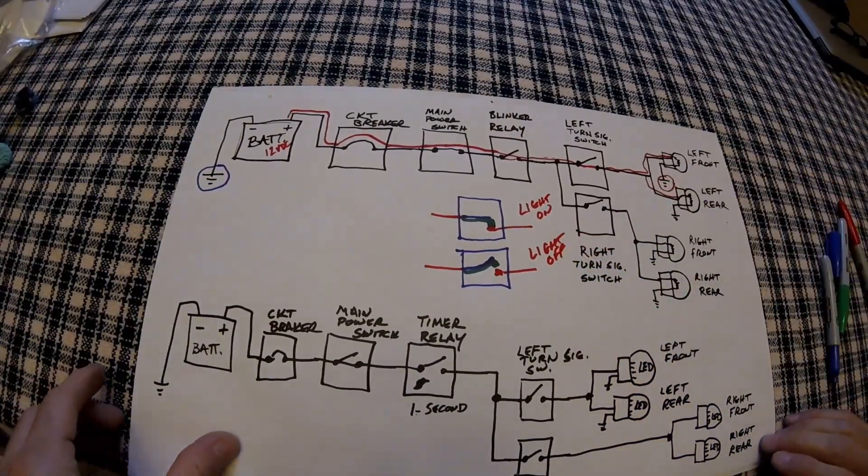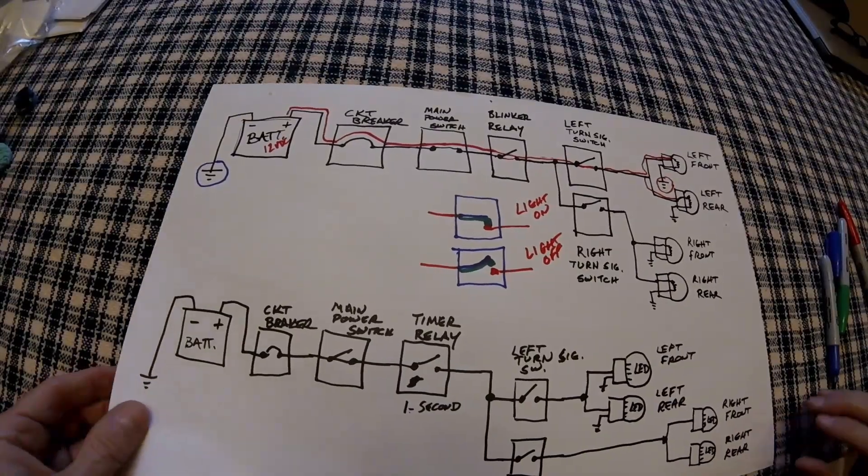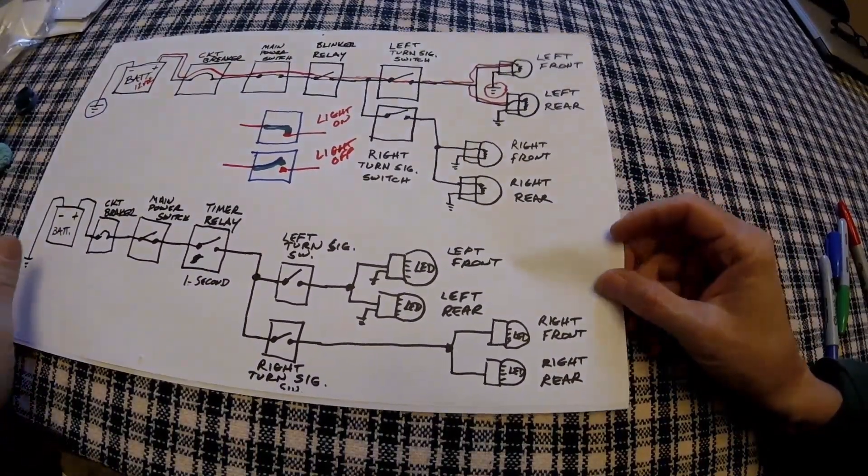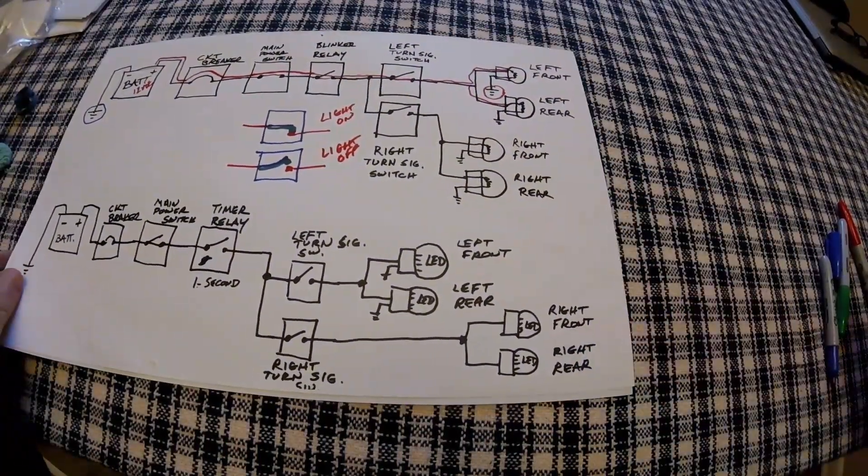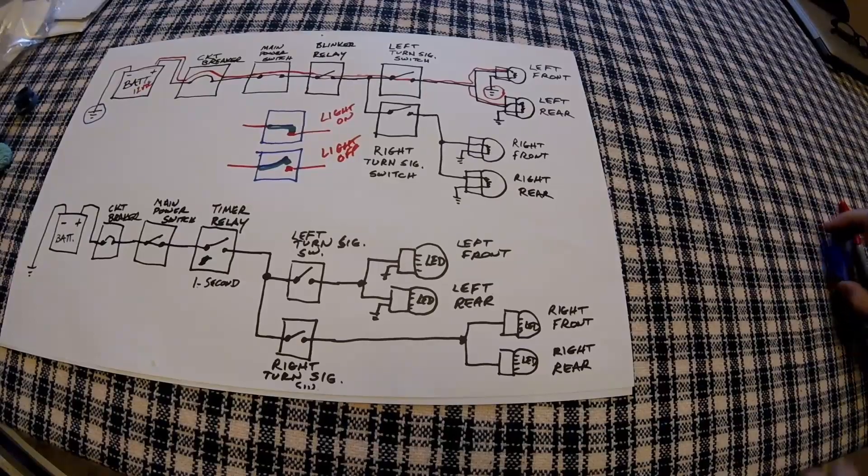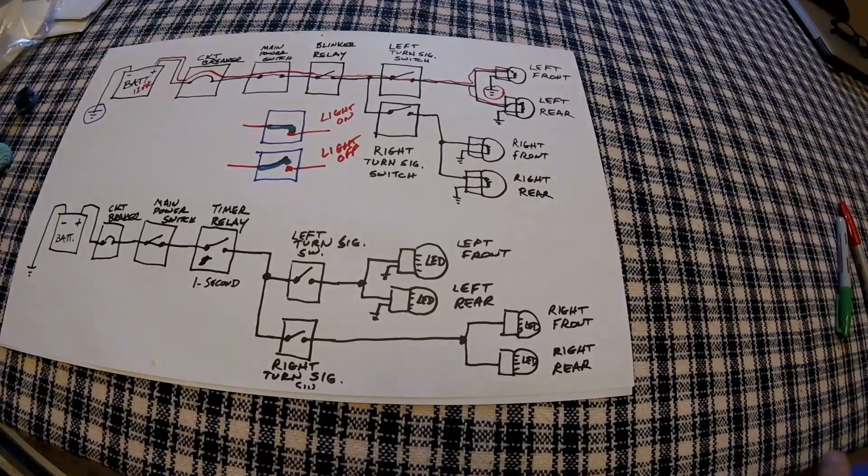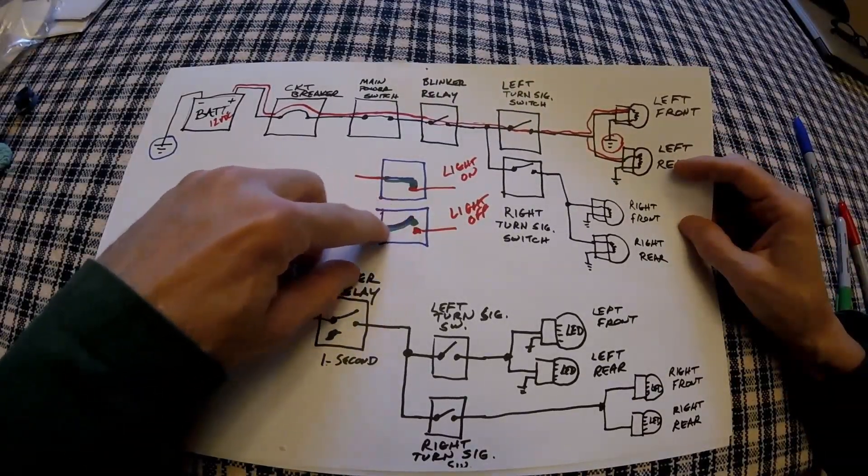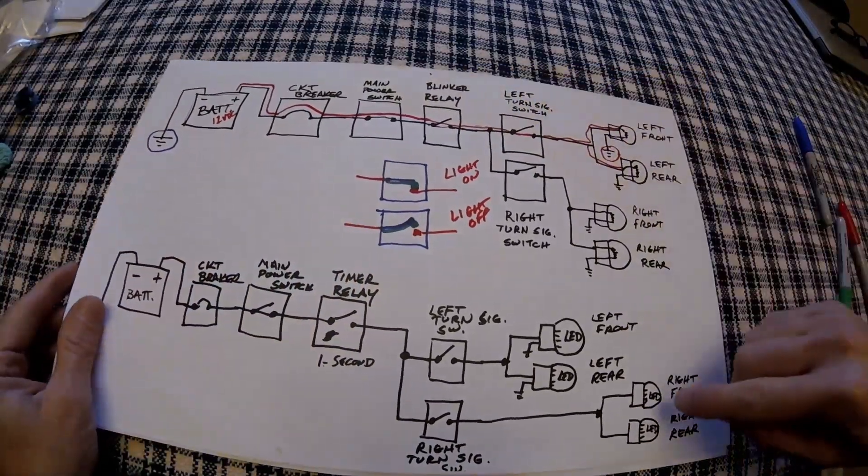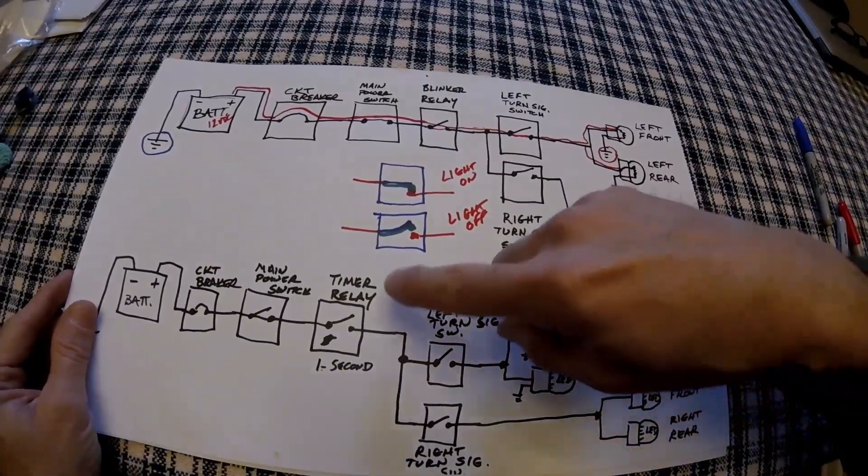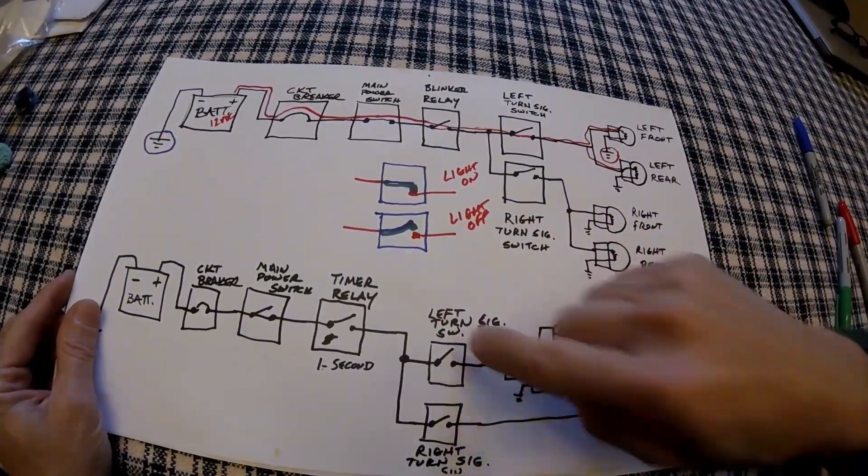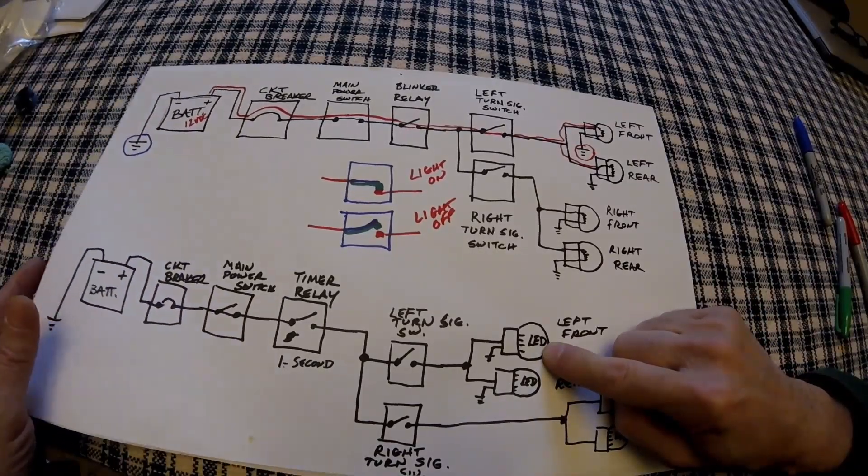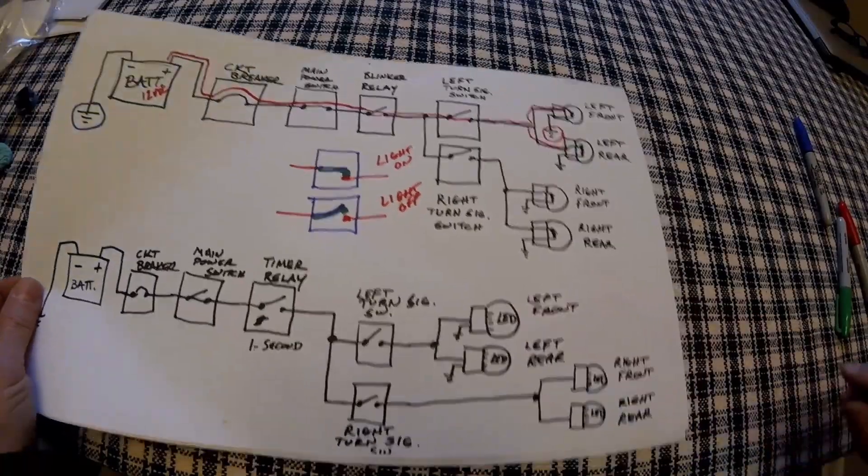So what actually happens is when you install LED bulbs, like on this drawing below, is the LEDs draw so much less than regular incandescent bulbs, it doesn't generate enough current to make this bimetallic strip get hot and bend. And therefore, when you push the turn signal switch for whatever side you're using, the LED will come on and it won't shut off. And this is the problem that people run into.